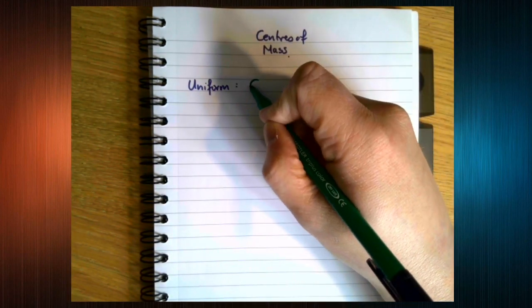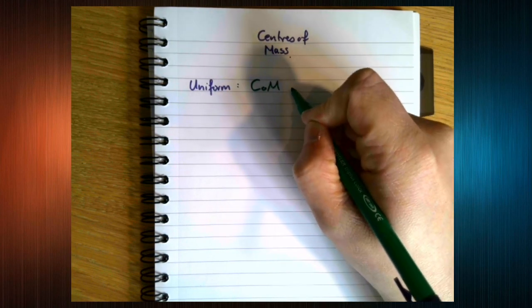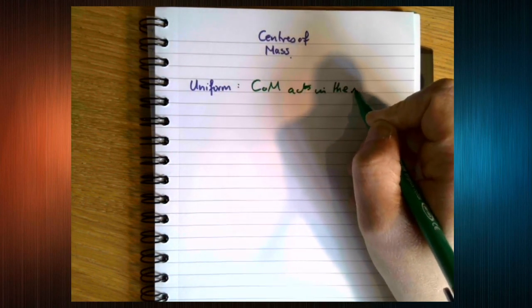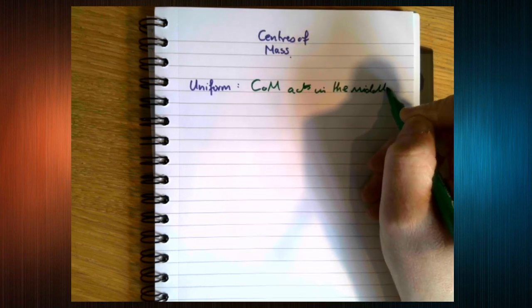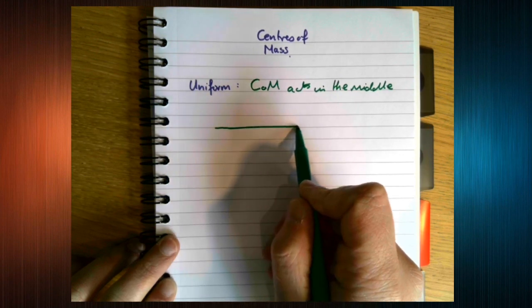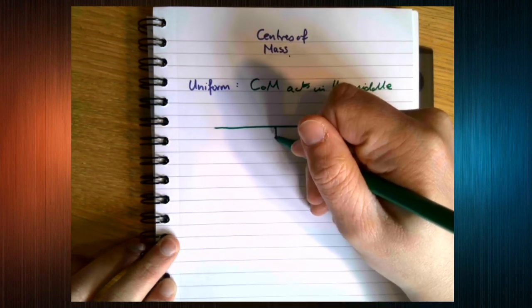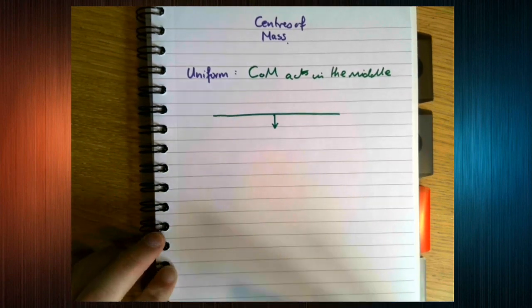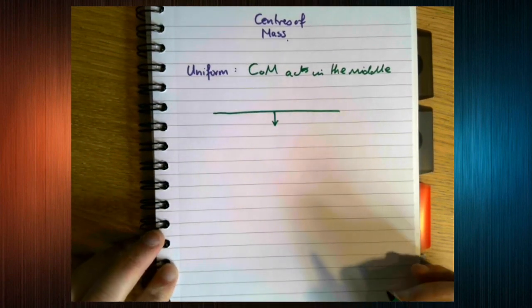If an object is uniform, generally it means the center of mass acts in the middle. So if we have a beam, the weight acts in the middle.